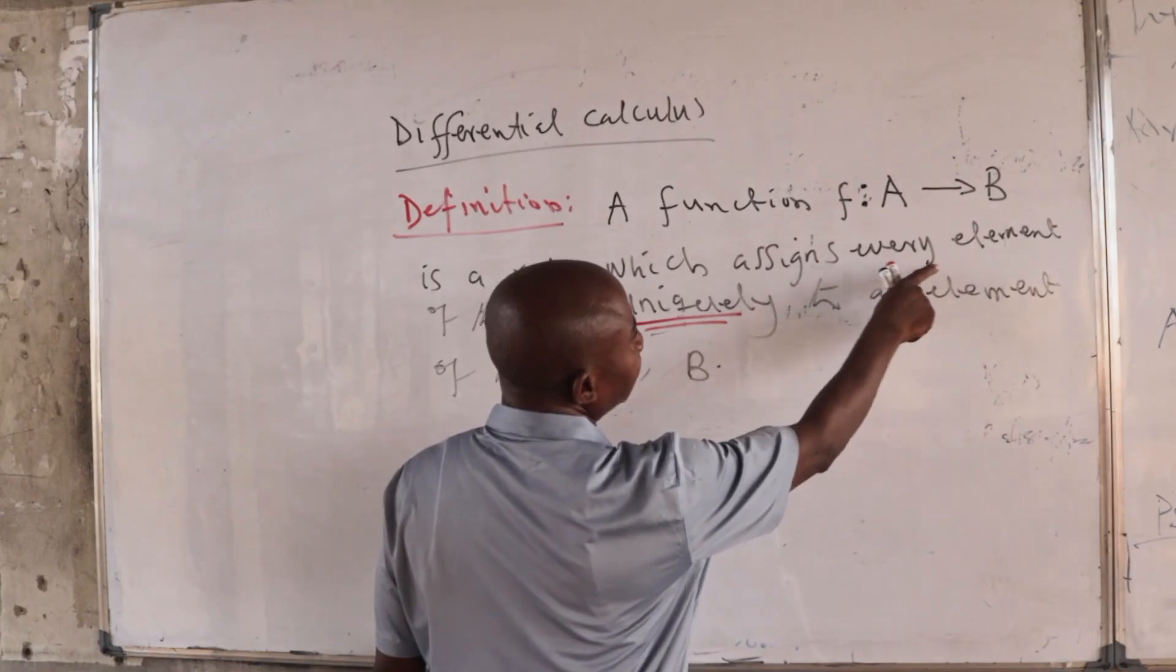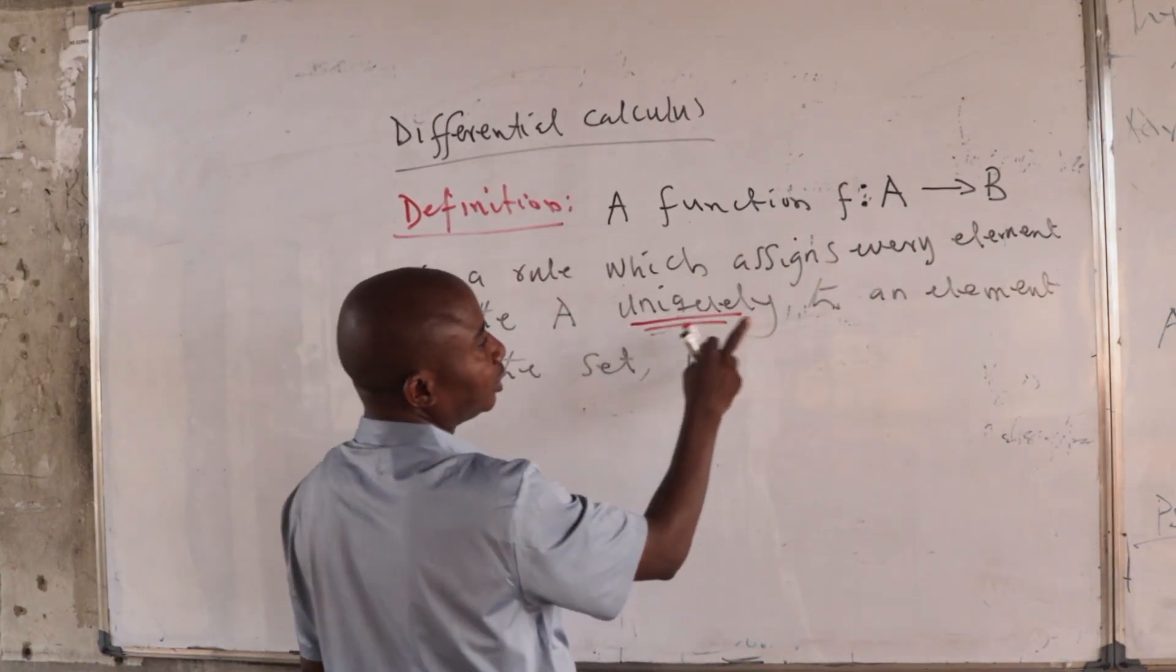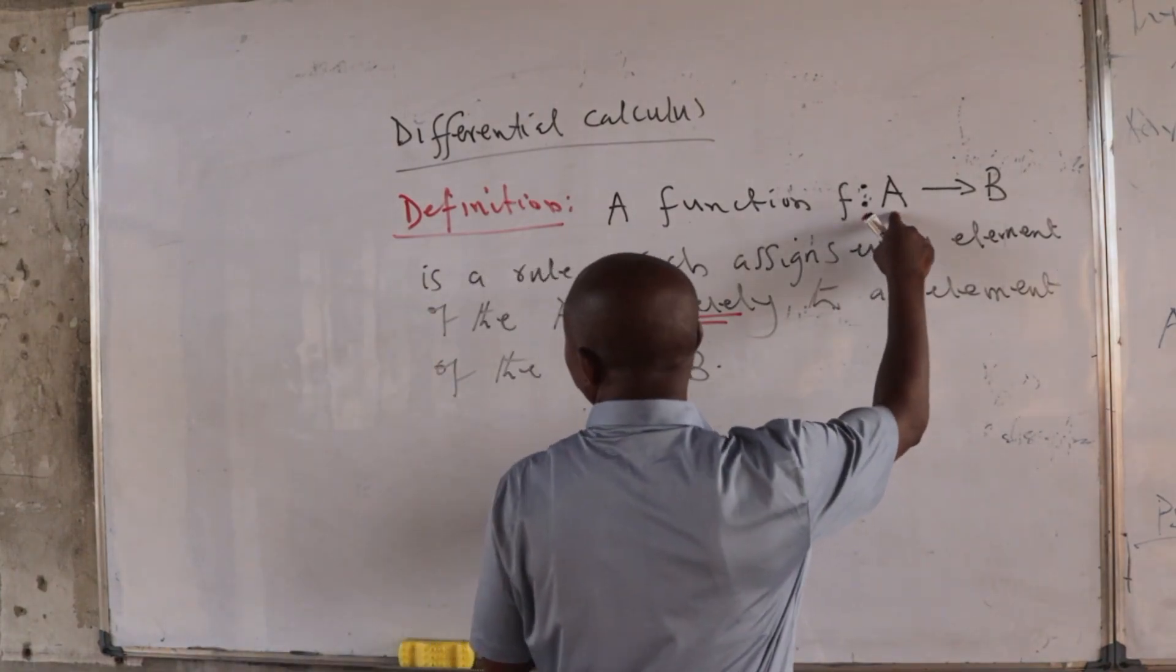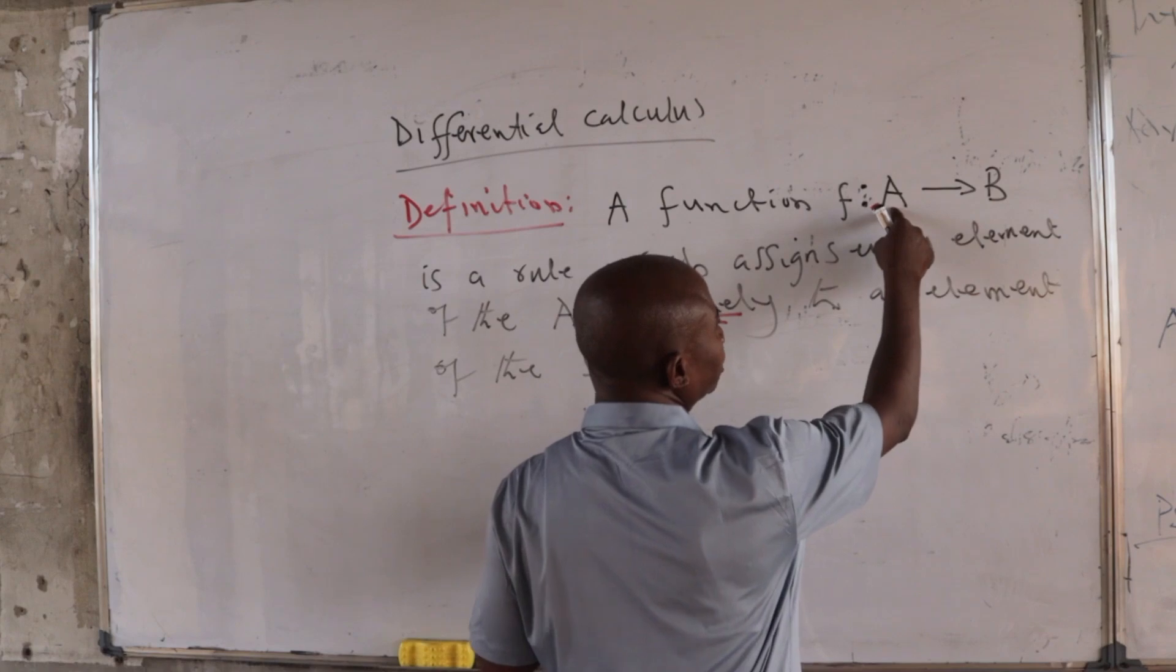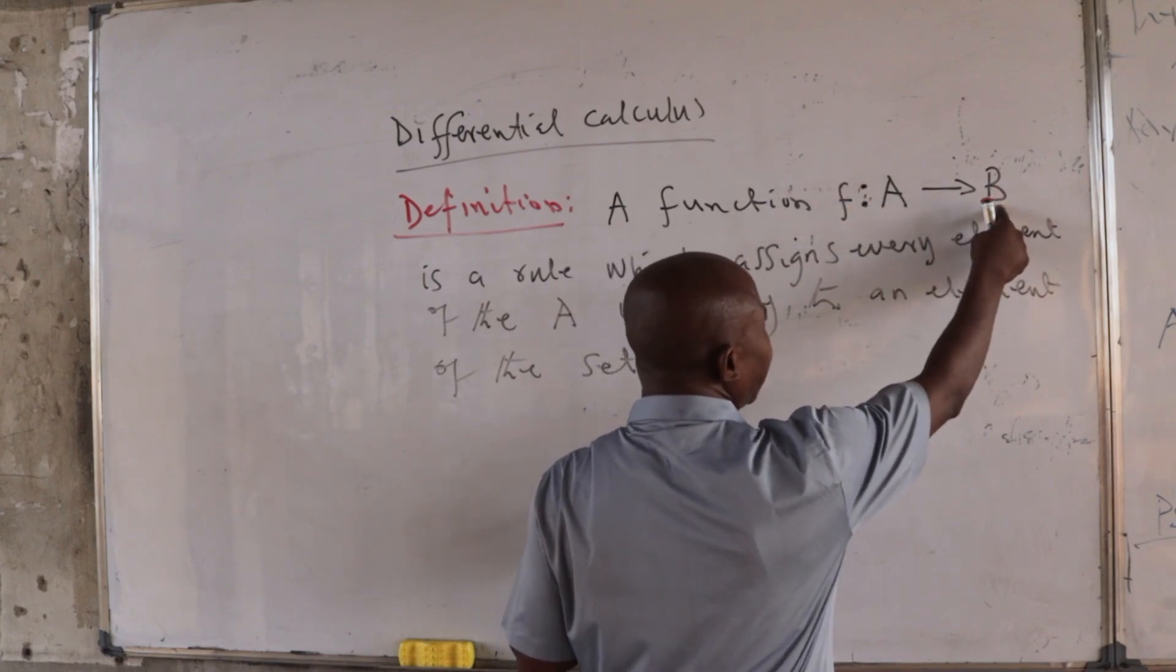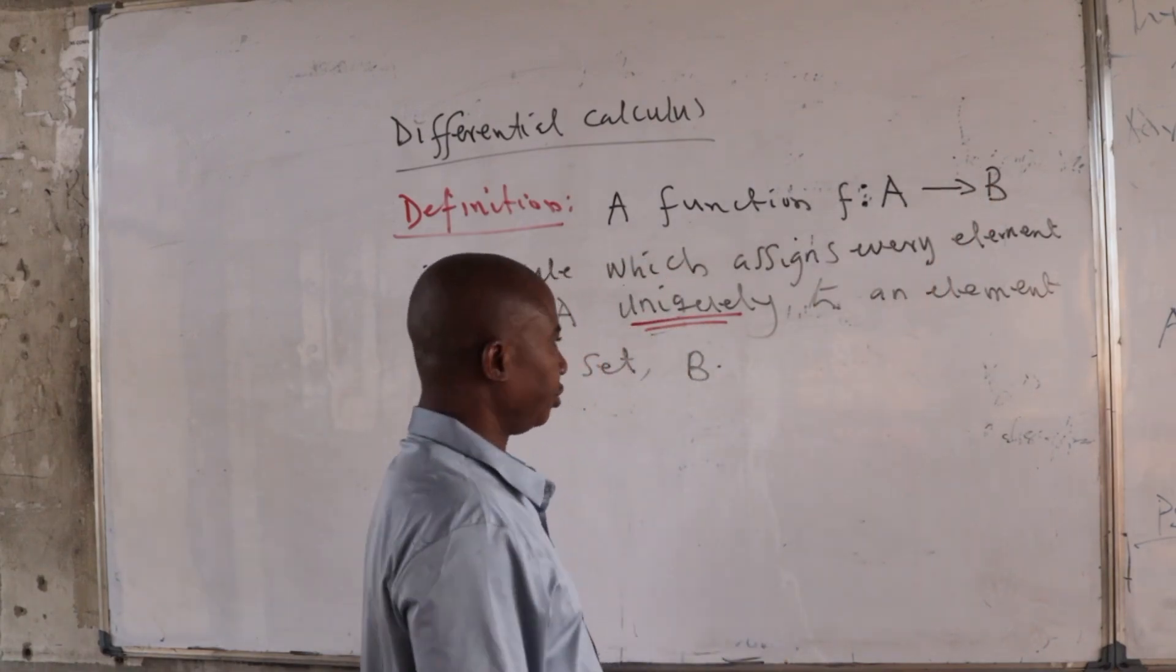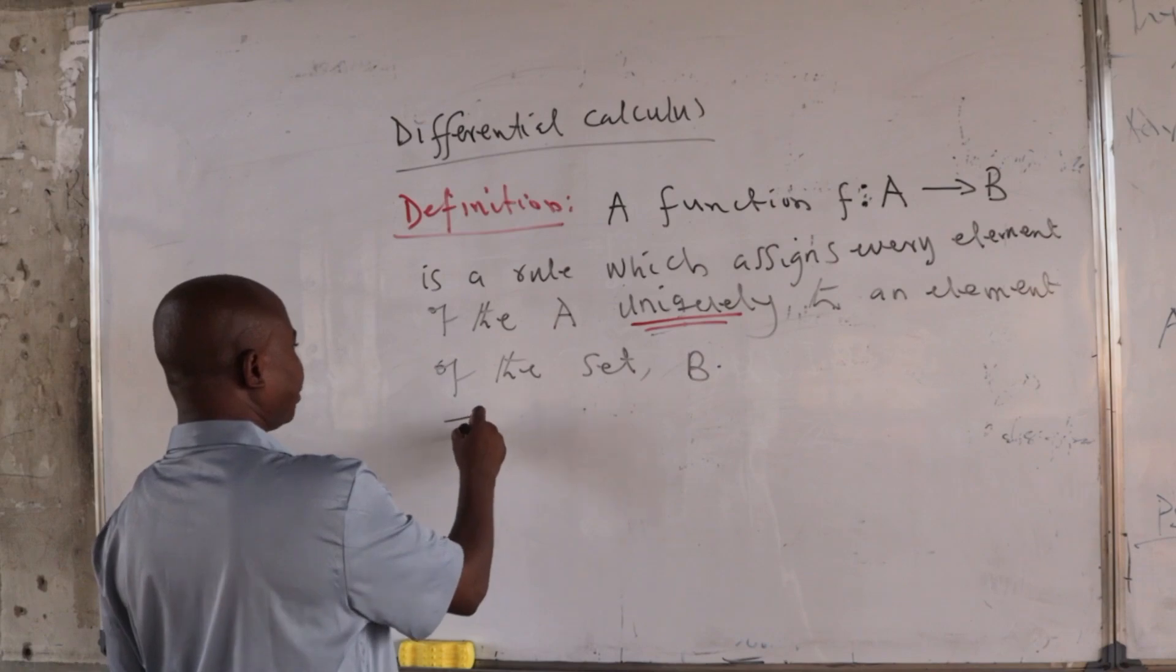That assigns every element of the set A uniquely to an element of the set B. For any element A, when this function acts on it, what it gives us is a member of the set B, and it gives us one and only one element of the set A.